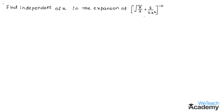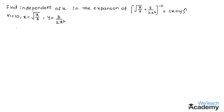First, let us compare the given binomial term with (x + y)^n. On comparing, we get n = 10, x = √(x/3), and y = 3/(2x²). We already know that the general term in the expansion of (x + y)^n is given by T(r+1) = nCr · x^(n−r) · y^r.